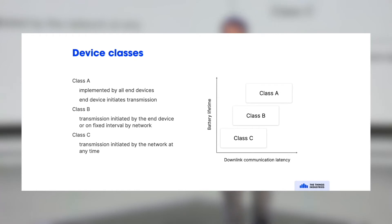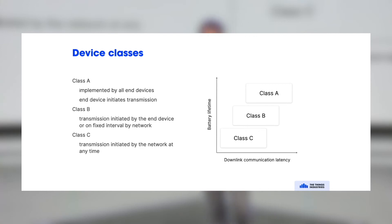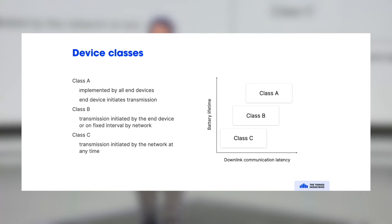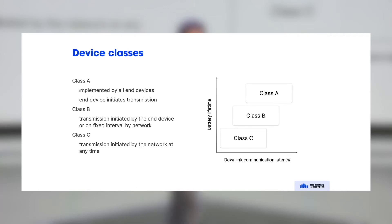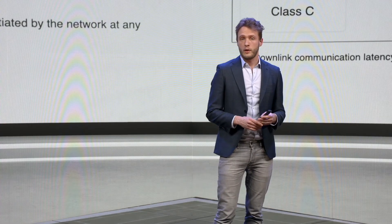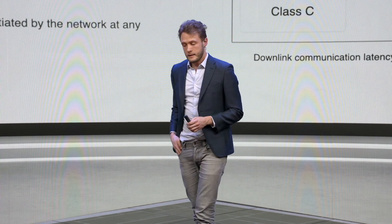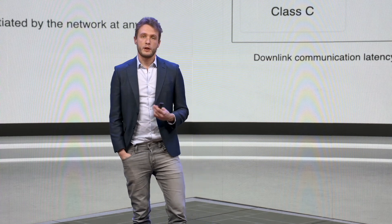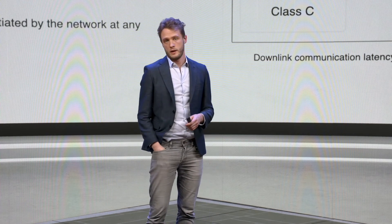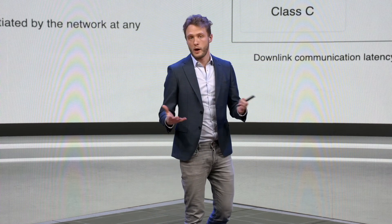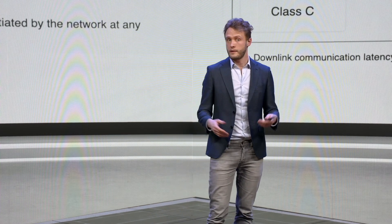Class C stands for continuous downlink — the end device is continuously listening for downlink messages, which allows the network to send a message at any time. This is typically a temporary mode, or it applies to end devices connected to a power source, for example street lights, so you can turn them on at any time since they already have a power source.